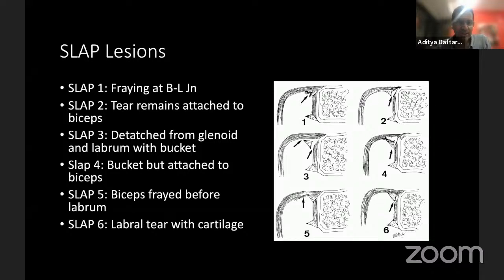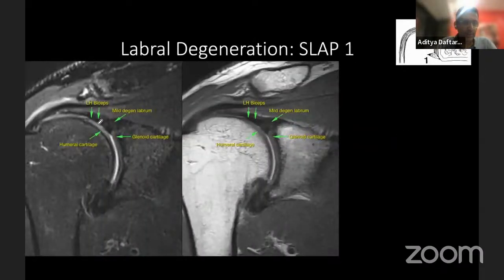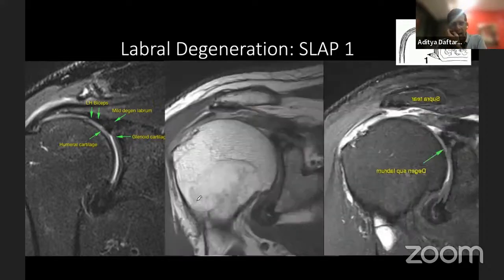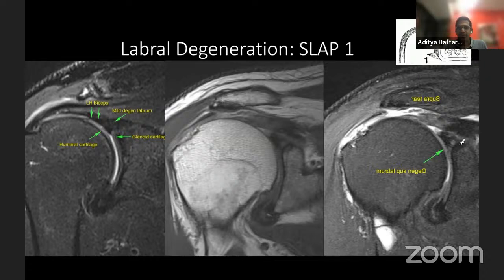The variety of SLAP lesions: SLAP 1 is fraying at the biceps labral junction; SLAP 2 is a tear that remains attached to the biceps; SLAP 3 is detached from the glenoid and labrum with a bucket handle component; SLAP 4 is attached to the biceps; SLAP 5 is fraying before the labrum; and SLAP 6 is a labral tear which has taken off a bit of cartilage, like a variation of a GLAD lesion. A normal biceps labral junction shows the long head of biceps, minimal labral degeneration, glenoid and humeral cartilage, and a triangular labrum. Compared to a patient with a labral tear showing intrasubstance degeneration — a bright spot within the labrum — that's a type one SLAP lesion.